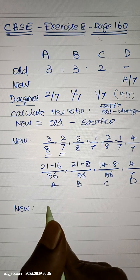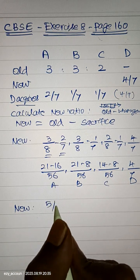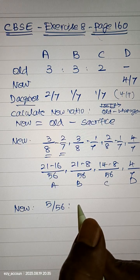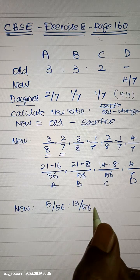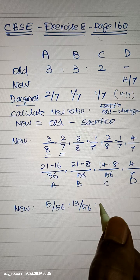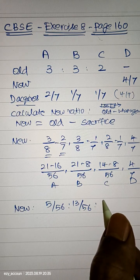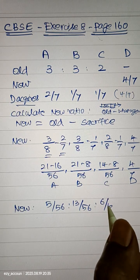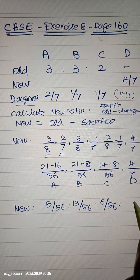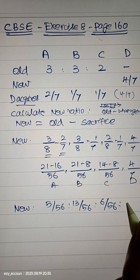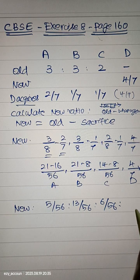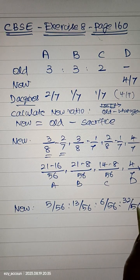So the new is 21 minus 16 is 5 by 56, is to 21 minus 8 is 13 by 56, is to 6 by 56. You are getting some very odd numbers or different numbers, not in the ratio of the old one. They are all big denominator. So 4 by 7, you can write it as into 8 if you multiply 8 by 8, which is equal to 32 by 56.